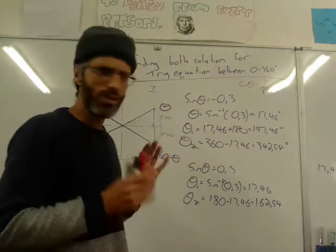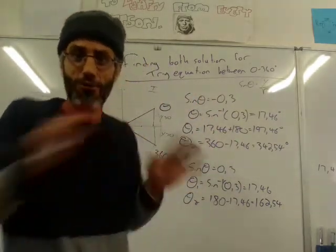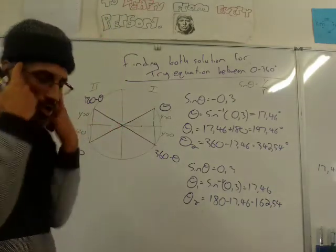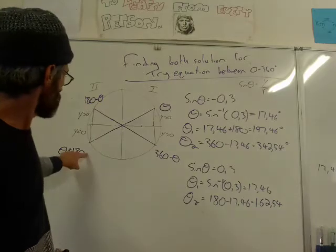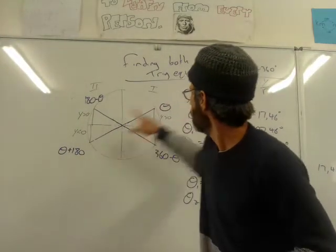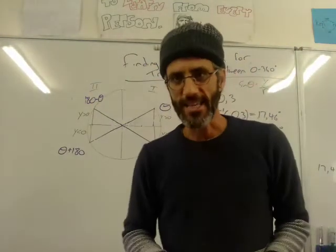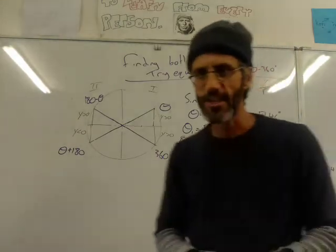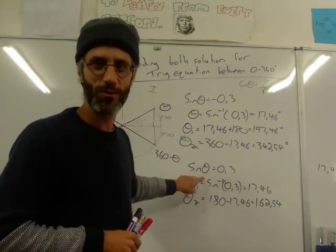If sine is negative, I find theta by doing sine-minus-one of the positive value — I ditch the minus, get a wrong answer: the same 17.46. I'll use it to get the right answer. Both solutions should be in the third and fourth quadrant because the y's are negative — that's why sine is going to be negative. To get the solution in the third quadrant, I add 180: theta plus 180, which gave 197. The second solution is 360 minus theta — 360 minus 17.46 — giving 342.54. In each case I get two solutions. There are two solutions for each equation. I'm going to make another two videos for cosine and tan, but it really is the same thing.